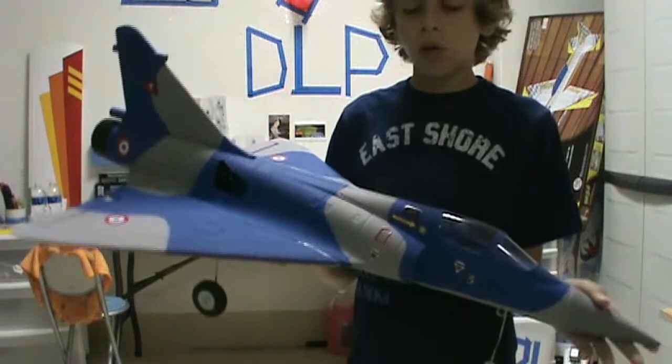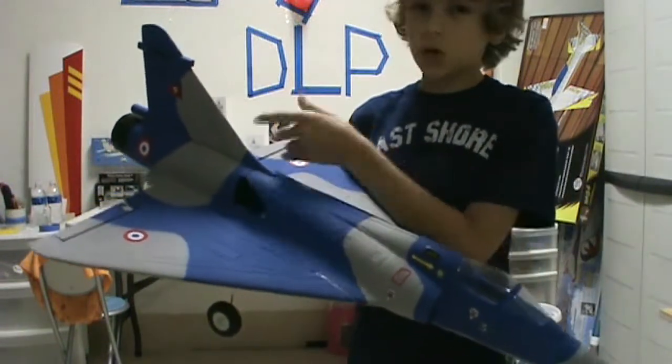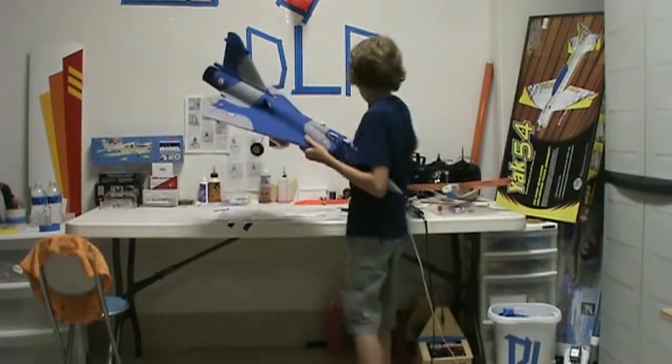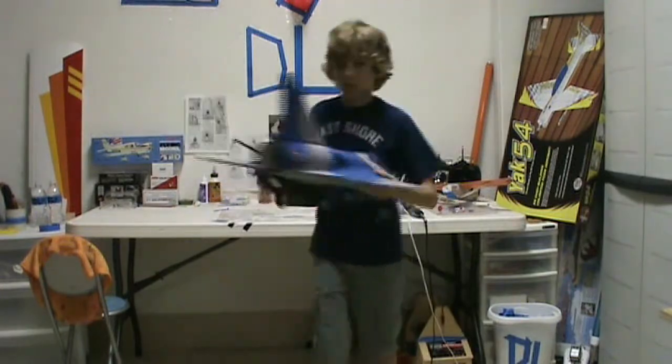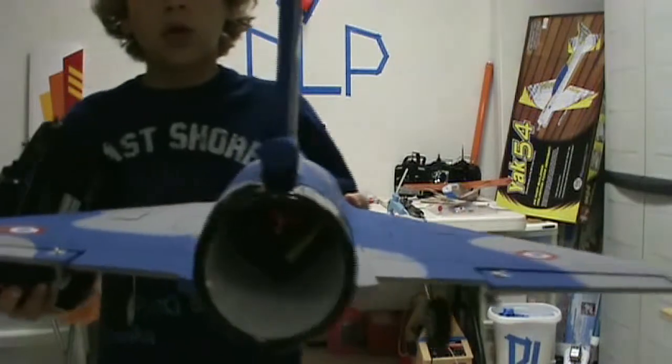So right now I'm going to show you how it works. I'm going to turn it on. So it's a delta wing airplane. As you can see there's a ducted fan right there. Turn that on.